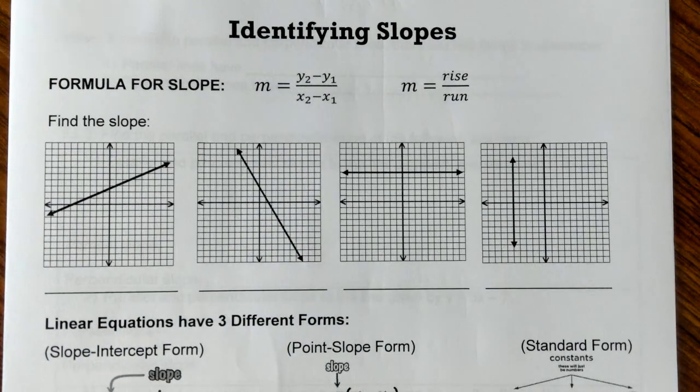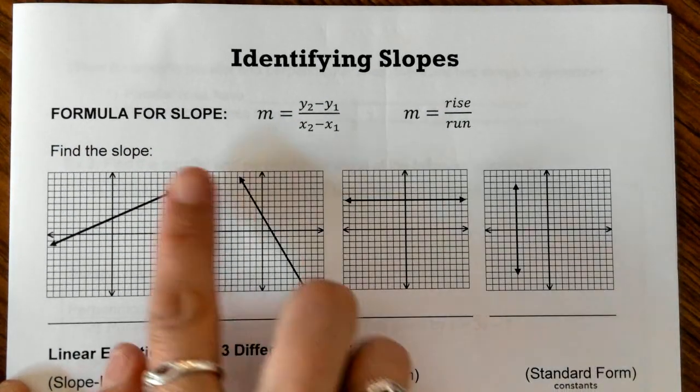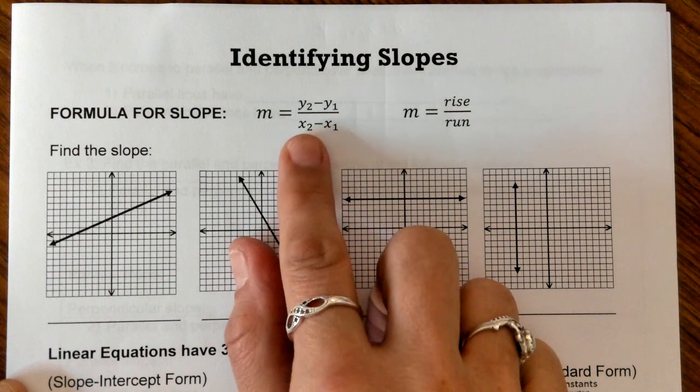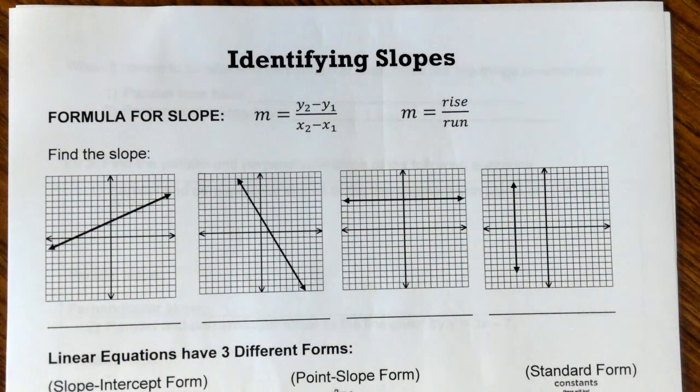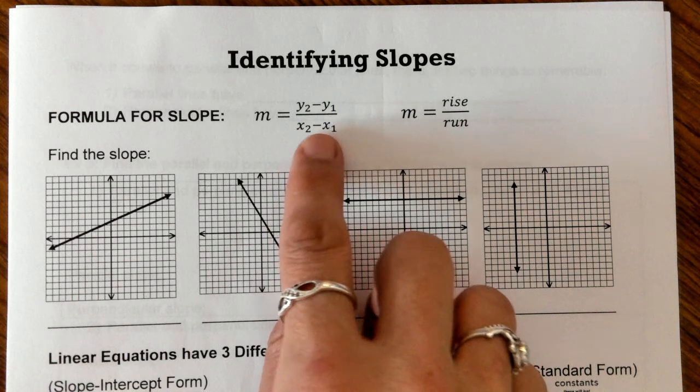All right, we're going to talk about identifying slopes and get into parallel and perpendicular lines. First of all, your formula for your slope is y2 minus y1 over x2 minus x1. This is your rise over your run, also known as change in y over change in x. This is how your y is changing, and how your x is changing.